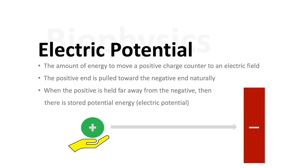Another important biophysics concept is electric potential. The amount of energy to move a positive charge counter to an electrical field is essentially the definition of electric potential. The positive end is pulled towards the negative end naturally, probably not breaking news to anybody. However, when you hold the positive end far away from the negative then there is stored potential energy, right? It's just like if you have a rubber band and you stretch it out, well when you release it you release that stored energy. It's the same concept with electric potential.